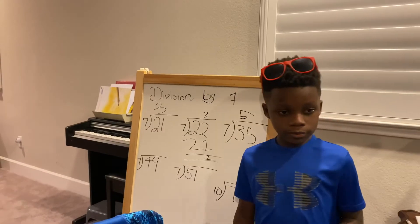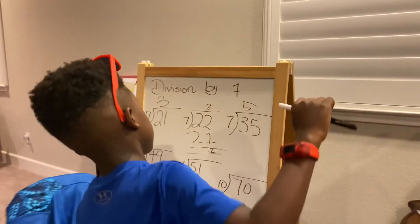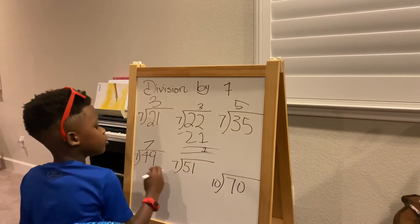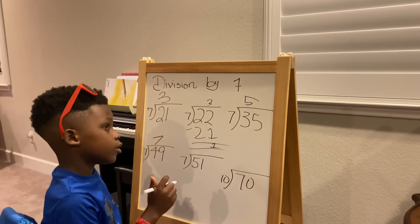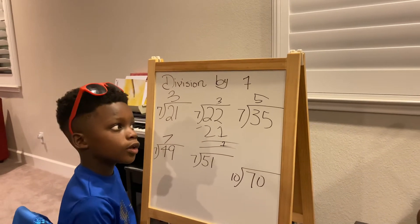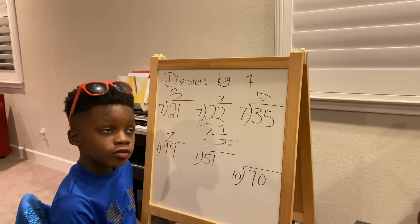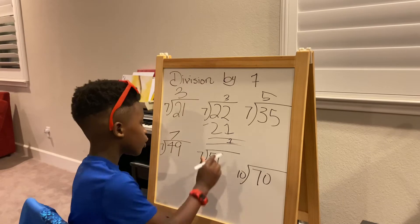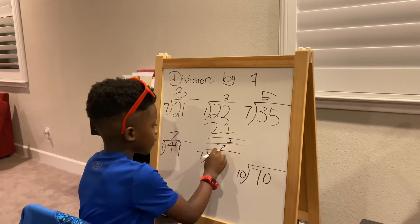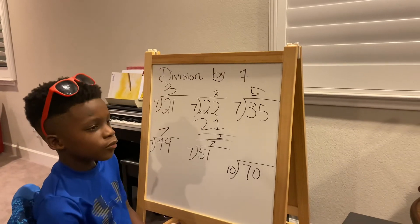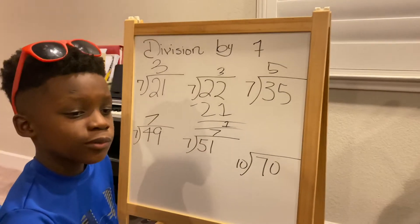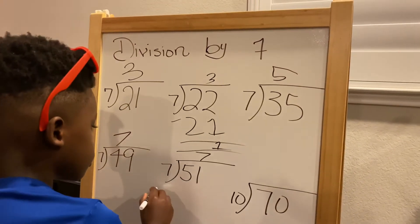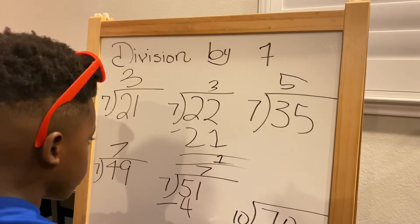How many groups of seven can make 51? None, because 51 is not on the seven times tables chart. But in this case, yes — seven groups with three remainders. Seven times seven equals forty-nine, which is right here on the chart.